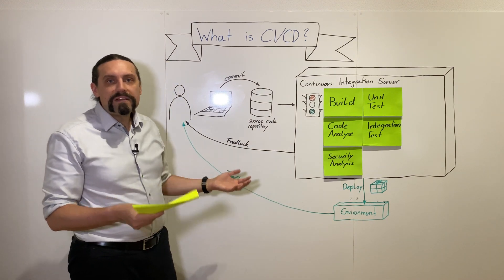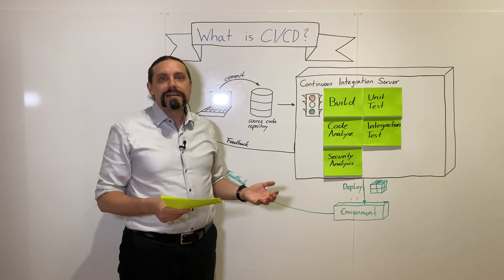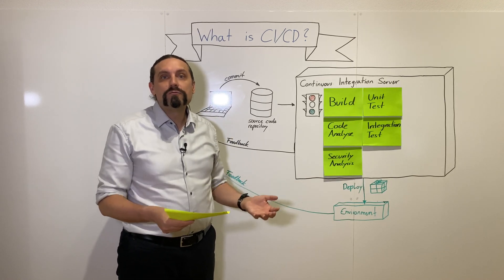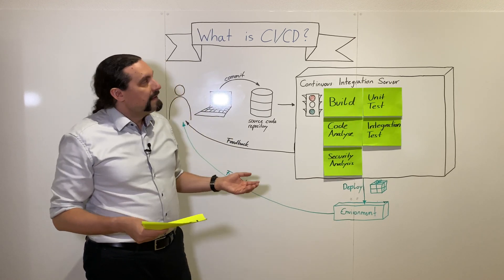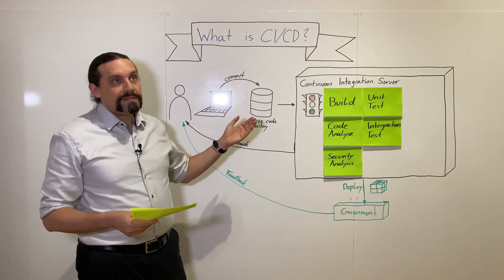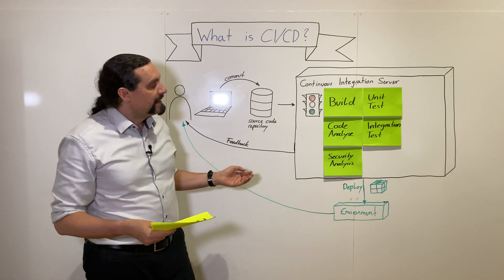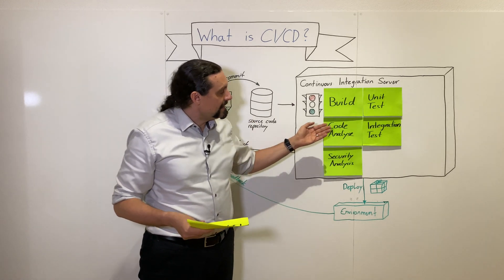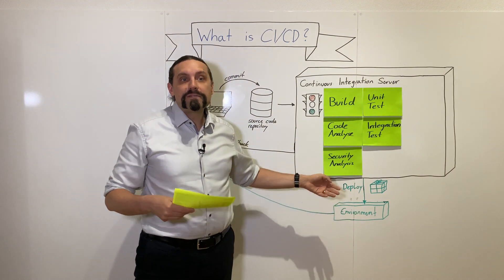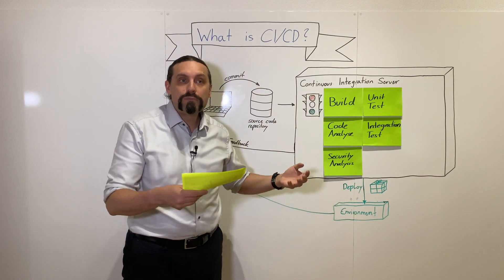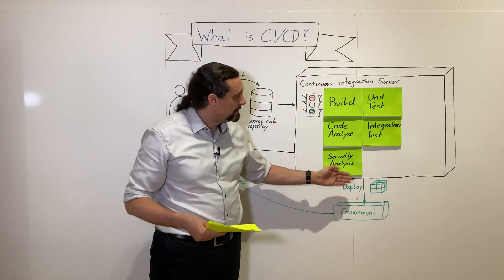With that step, nothing has been deployed to an environment. The CD step, which stands for continuous delivery, is then needed to have something deployed to a production-like environment.